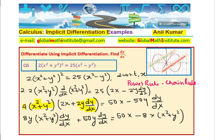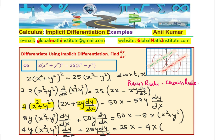We can take dy/dx as common. Let us now divide everything by 2, since 2 is a common factor. Rewriting: 4y(x² + y²) dy/dx + 25y dy/dx equals 25x minus 4x(x² + y²). In dy/dx, we have 4y(x² + y²) and 25y as common terms on the left, and the right hand side has all those remaining terms.